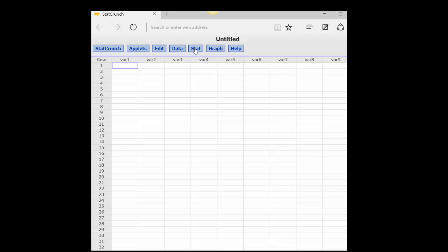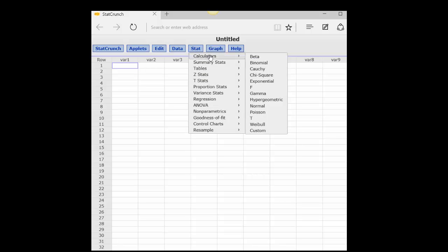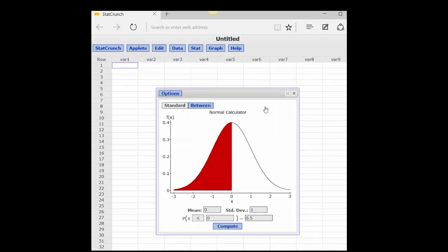Let's go up here to Stat, and we'll go to Calculators, and let's do a normal z-test first of all. Here's our calculator. We're on Standard, which shows either a left-tail or right-tailed test.